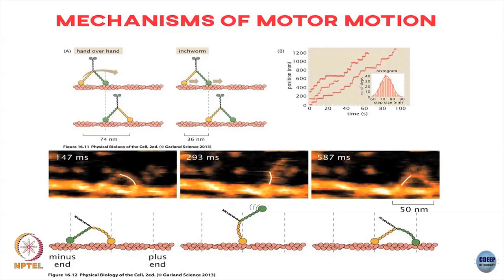If you place a fluorescent tag on one of these heads, then if it was hand-over-hand, this leg would have unbound and pivoted on this hinge and bound somewhere over here. The distance this head would cover in a single step would be on the order of 74 nanometers. Whereas if it was doing the inchworm movement where both heads move simultaneously, each head would move on the order of 36 nanometers.